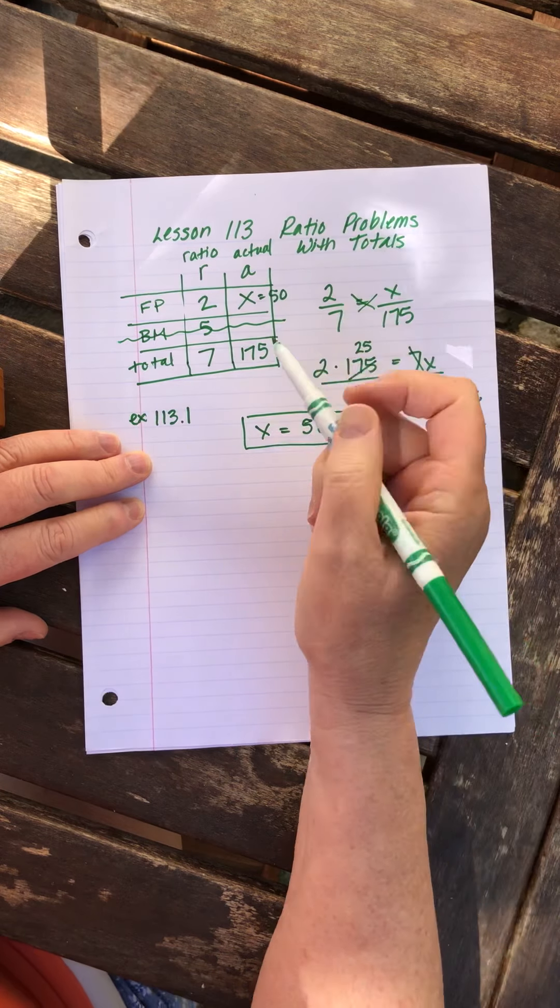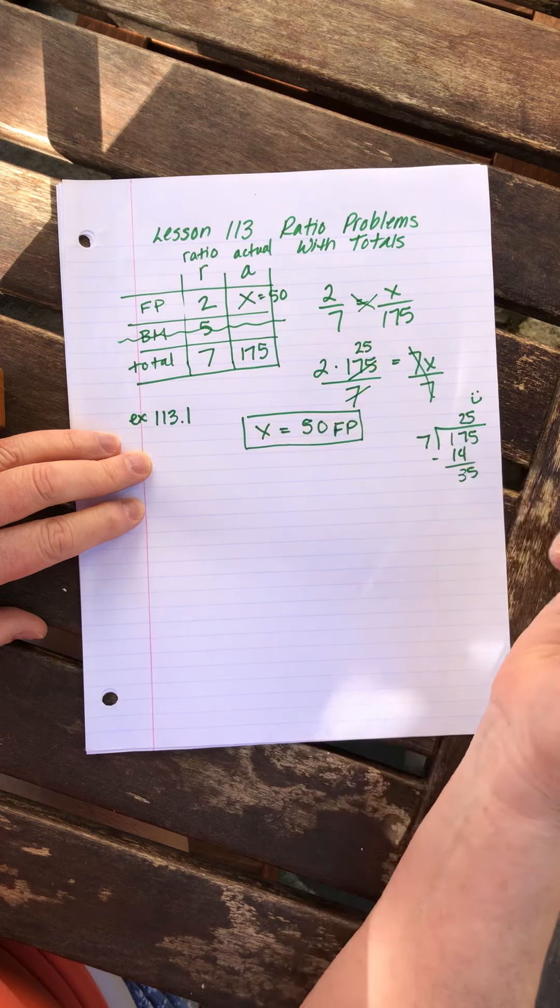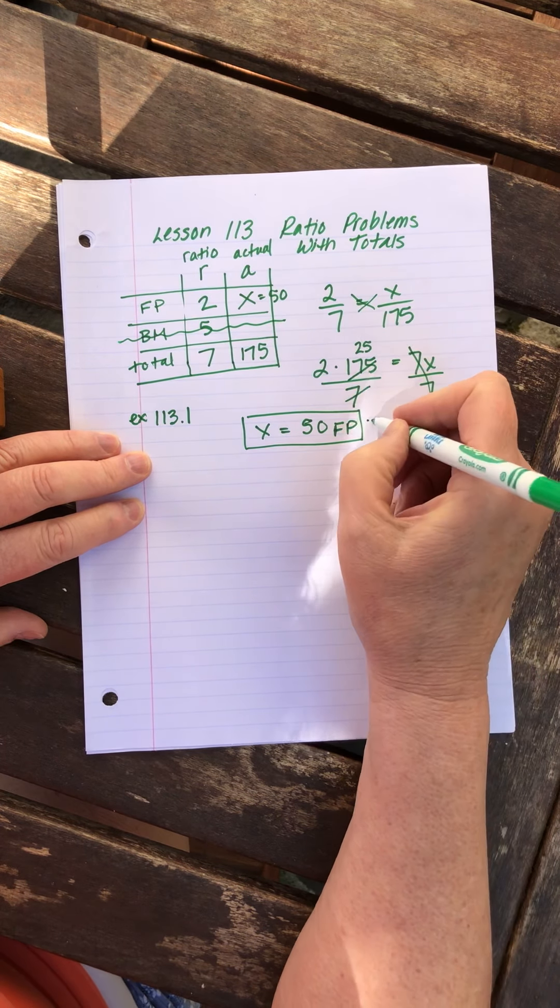And I can double check this by going, oh, 2 times 25 equals 50, 7 times 25 equals 175. So it proves to me mathematically that it works.